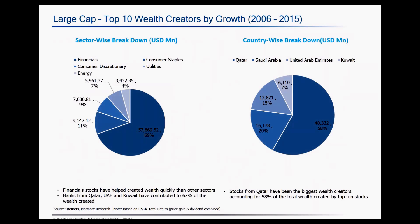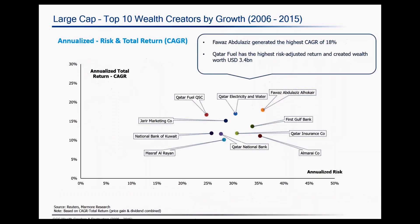This is the sector-wise and country-wise breakdown of the stocks. Most of the large cap stocks that have created wealth are from the financial services sector. Banks from Qatar, UAE, and Kuwait have contributed almost 67% of the wealth created. In terms of country-wise breakdown of the top wealth creators by growth, majority of the companies are from Qatar — both in terms of number and in terms of total wealth created — contributing close to about 58% of the total wealth created by the top 10 large cap stocks.